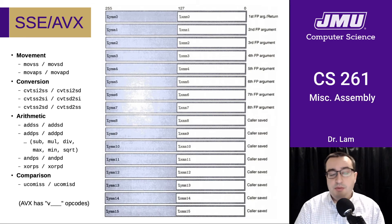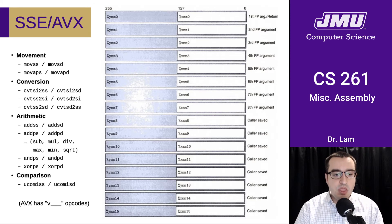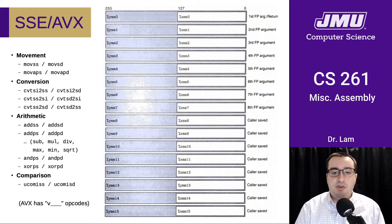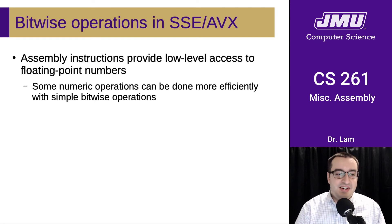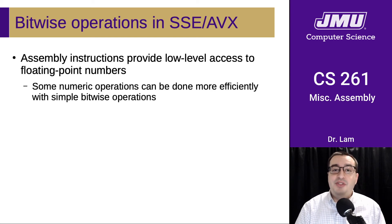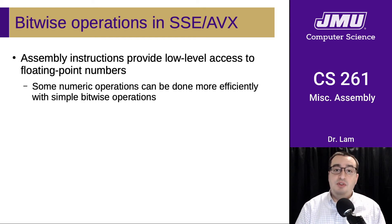All instruction names are the same between SSE and AVX — you just prepend a V to get the AVX version. We're not going to use this heavily in this course, but you should be aware of it. You should also remember all the caveats about floating point numbers we discussed back when we covered representation. There are some interesting ramifications now that you know both how those numbers are represented and how to manipulate them using assembly code.